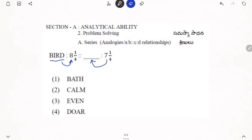BIRD means 8, 1 by 4. So 7, 1 by 4, what we will get? In this case, 8, 1 by 4 means what? 8.25, right? 1 by 4 means 0.25. Similarly, 7, 1 by 4 means 7.25.